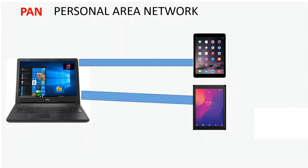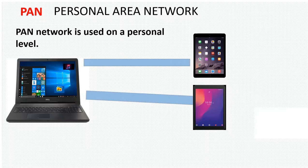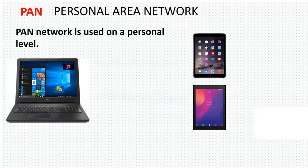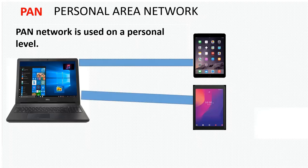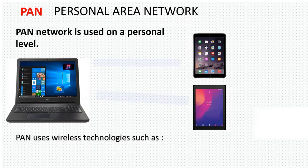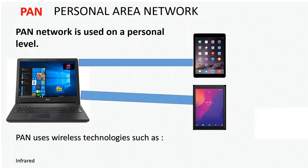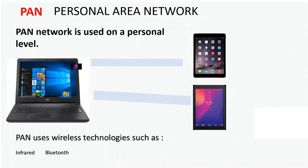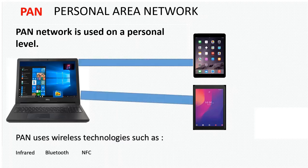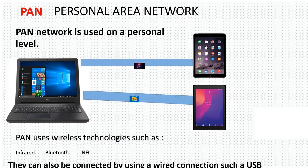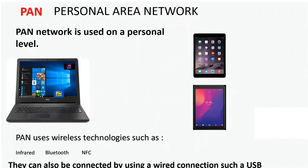Let's first talk about PAN. PAN stands for Personal Area Network. This is a type of network used on a personal level. It's a small network used for connecting devices such as laptops, tablets, and phones, and they connect to each other by using wireless technologies such as infrared, Bluetooth, and Near Field Communication. They can also be connected by using a wired connection such as USB. They are used for transferring photos, music, videos, and others.